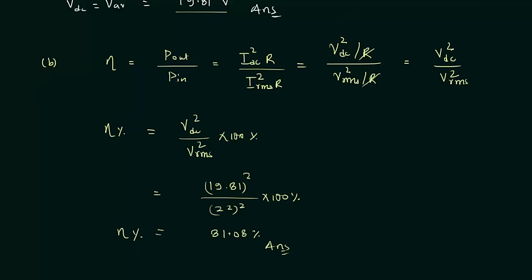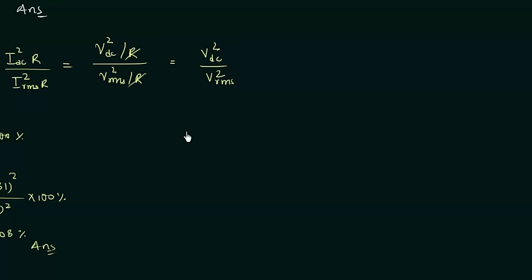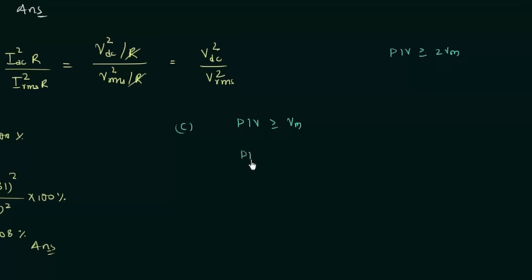Now Part C: peak inverse voltage. For a full wave bridge rectifier, PIV must be greater than or equal to Vm. For a full wave center tap rectifier PIV must be ≥ 2Vm. Since Vm = 31.11 V, the PIV must be greater than or equal to 31.11 volts.